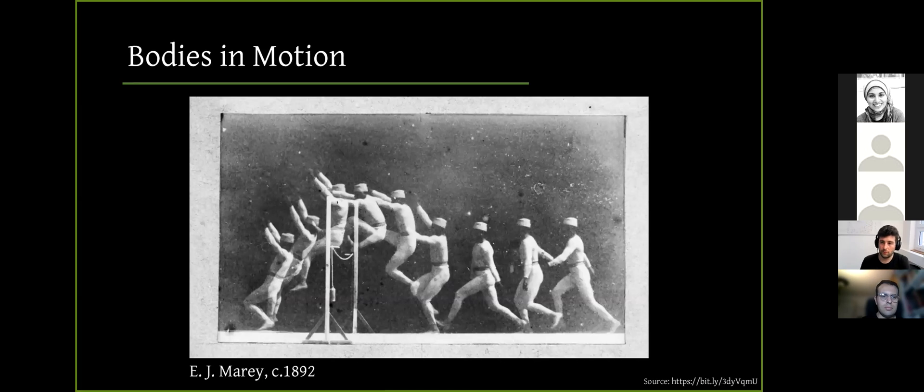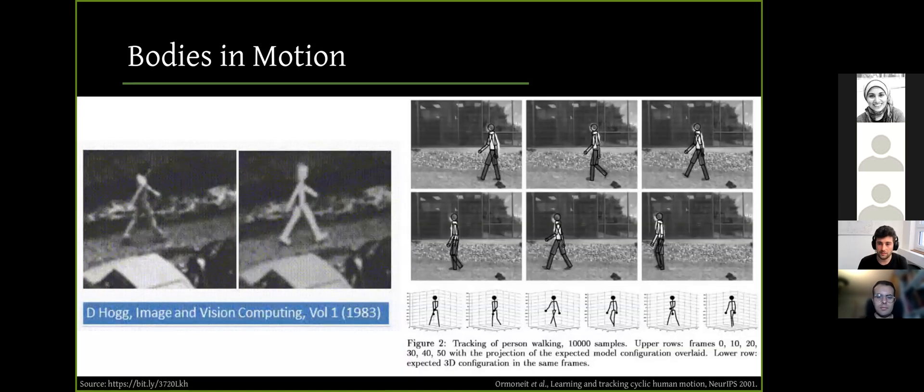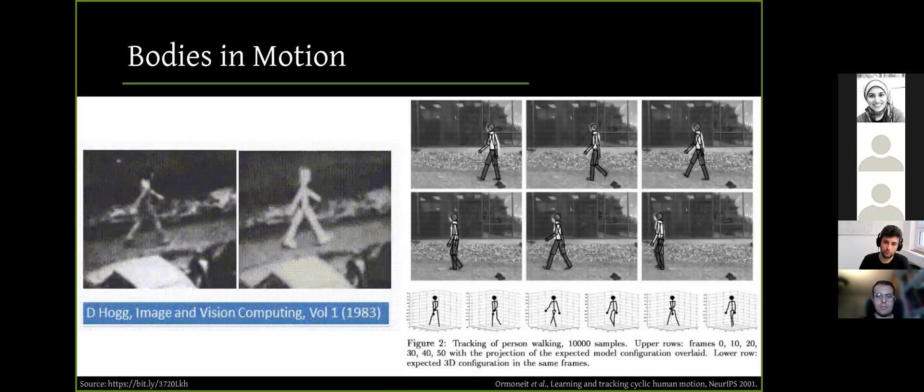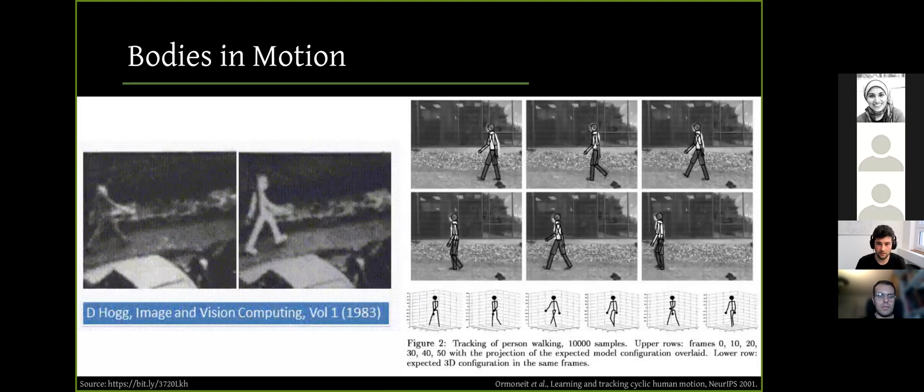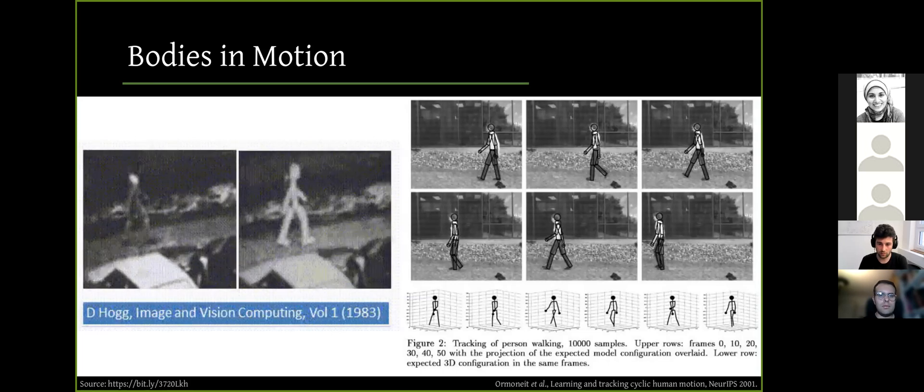And these interesting properties of motion inspired people to come up with creative ways to record motion right after the invention of the cameras. And here you see an image sequence taken by Etienne-Jules Marey, a French scientist who is the inventor of the chronophotographic gun. And this is the ancestor of movie cameras basically in the old times. And more recently, with the emergence of computers, scientists try to capture and track human motion in 3D. And early works in this area date back to 1983 to David Hogg's walking human model.